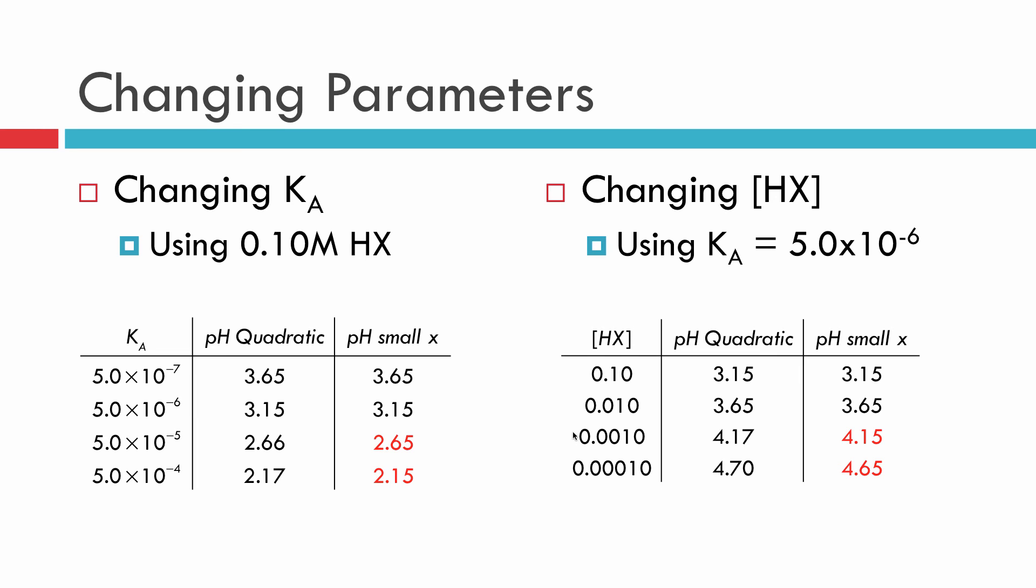So with our concentrations, they need to be fairly large. They need to be fairly large for this to work out. So we're really coming down to if we have a large concentration, we can make our approximation start at 10 to the minus 5th. However, if we have a low concentration, we're going to need a smaller equilibrium constant for this to work.